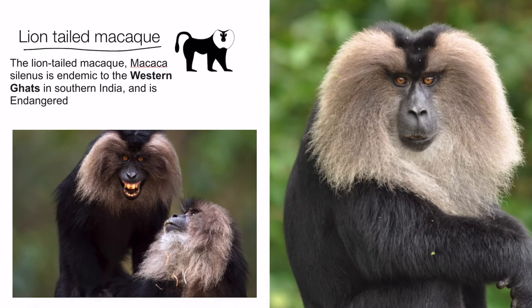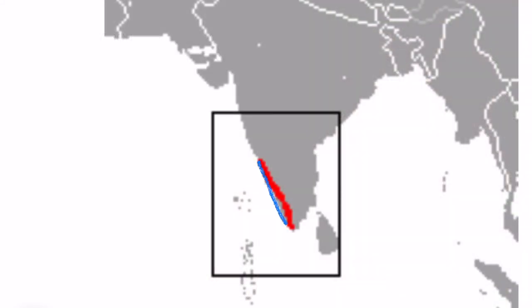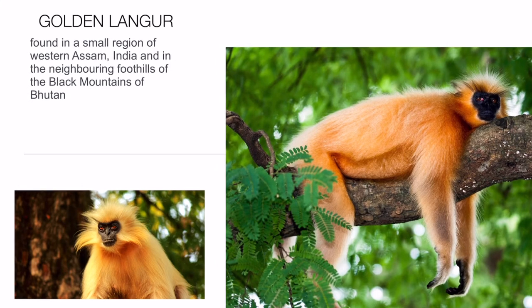The lion-tailed macaque is an endemic species of the Western Ghats — it is found only in the Western Ghats. In the entire world, this animal is found only in India, and it is also an endangered species, meaning its population is at risk. Its actual location is Kerala and Karnataka. This is our Western Ghats — the Western Ghats start here. Lion-tailed macaque. The next animal is the golden langur.